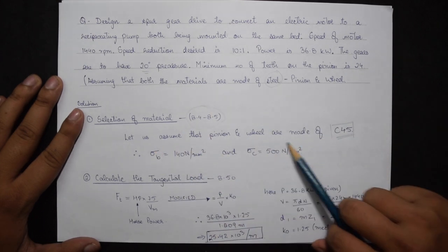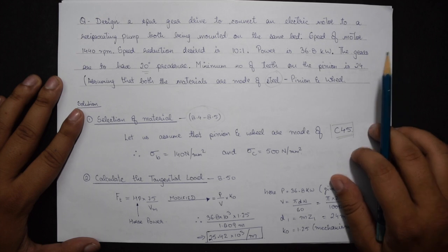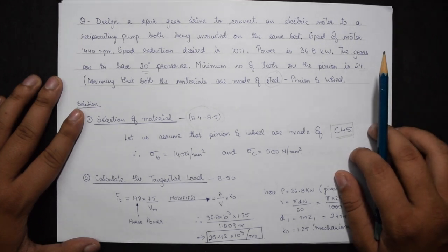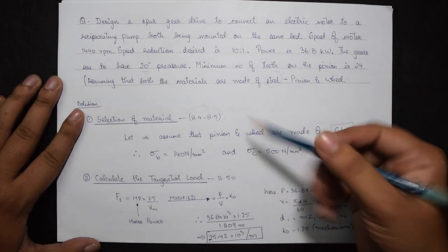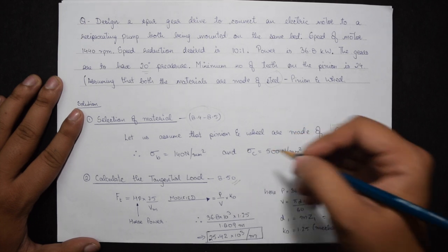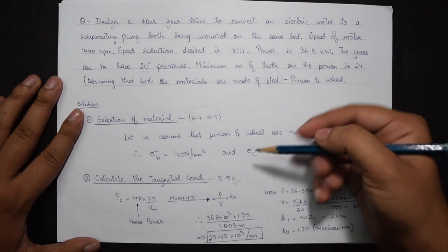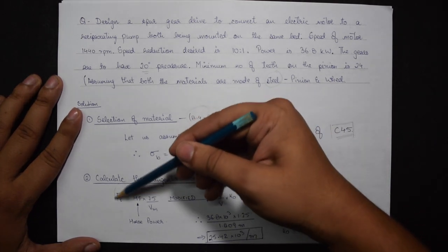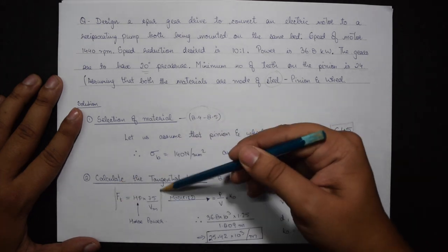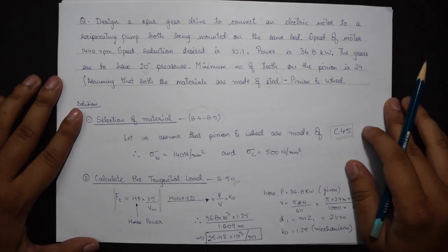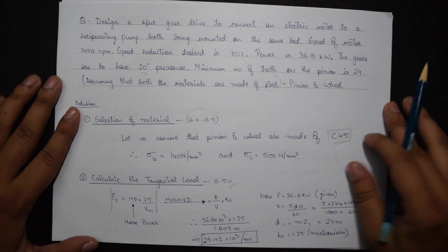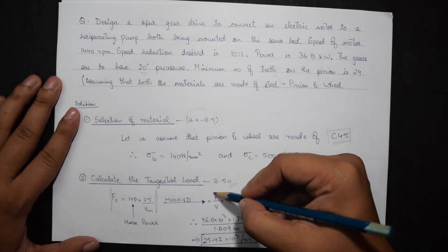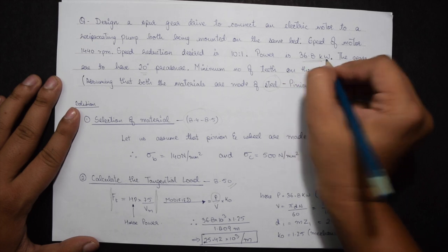Second step is calculating the tangential load given on page 8.50. The formula given is FT equals HP times 75 by VM. HP is the horsepower, but we have only been given the power, so the modified formula would be P times K naught divided by V.